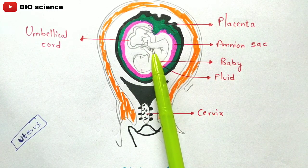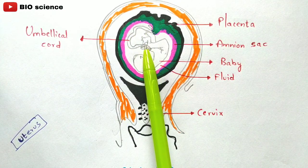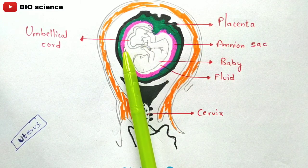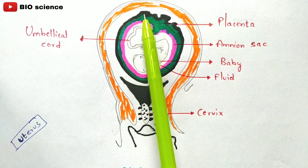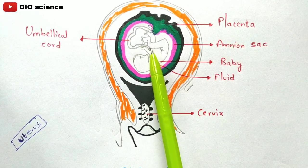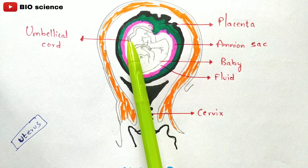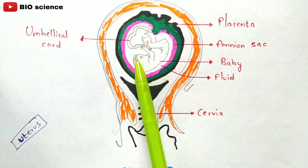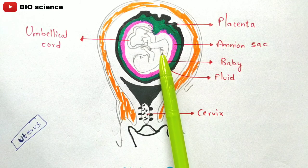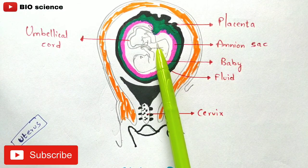How does the nutrition reach the baby? Through the umbilical cord. This pipe-like structure is called the umbilical cord. The nutrients — for example, if you take sprouts which are highly nutritious — will enter through this umbilical cord into the baby, and it attaches to the stomach of the baby at the navel position. So nutrients consumed by the mother will enter through the umbilical cord and reach the baby.